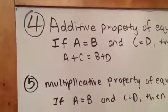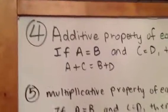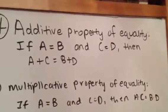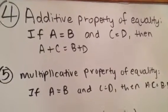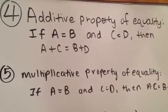Hi everyone, so in our second video in our algebraic property series, we're talking about the fourth property, which is the additive property of equality, also known as APE. This property is that if A equals B and C equals D, then A plus C equals B plus D.